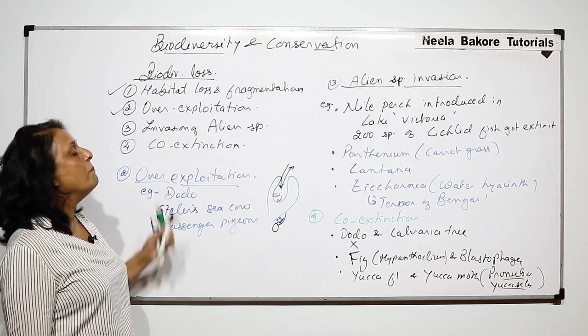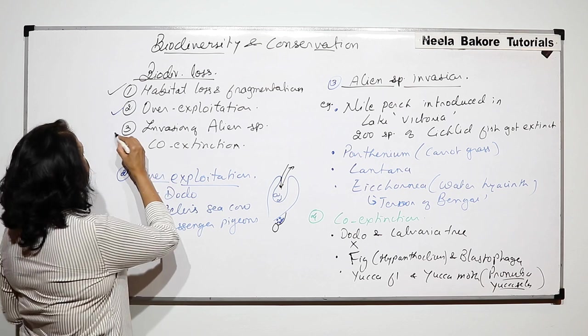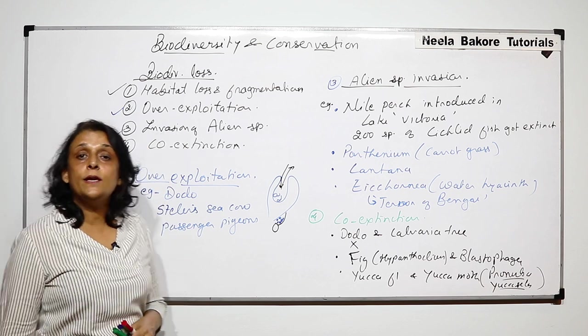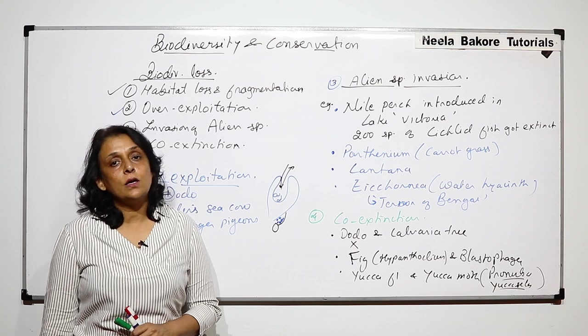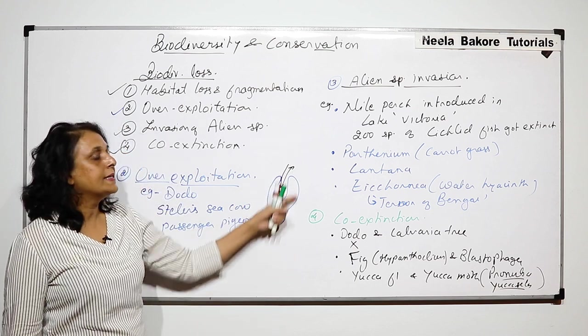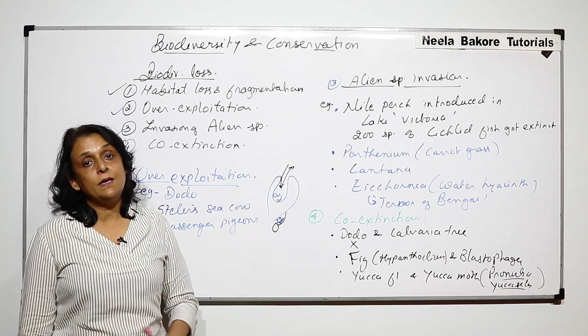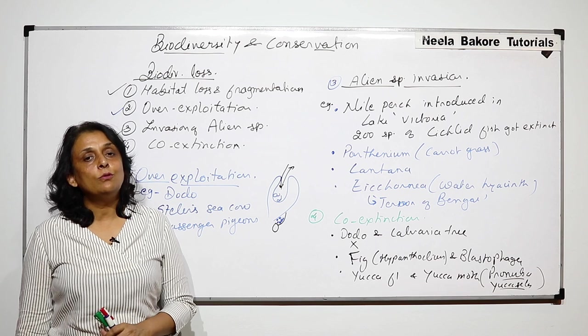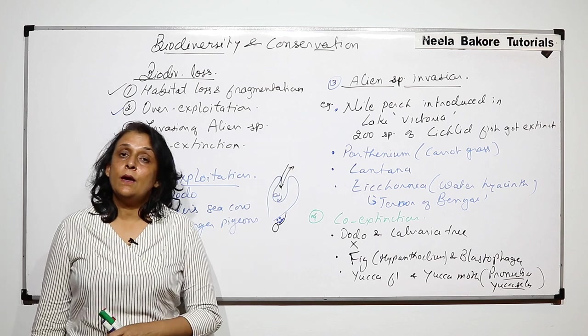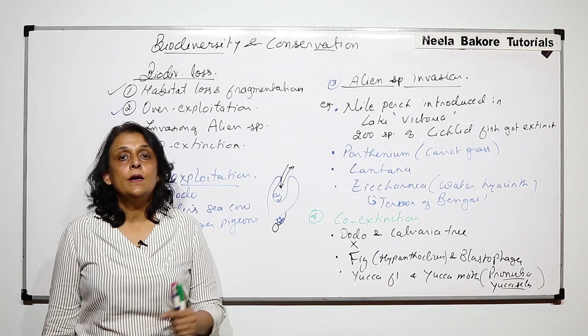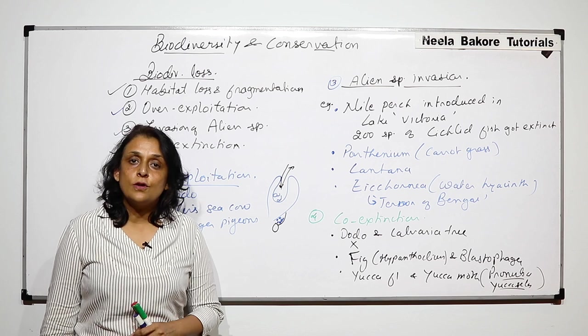There are four main reasons because of which biodiversity loss takes place, and these examples which we have taken are very important when we are talking about these categories. In the next part, we will take up why should we conserve biodiversity.